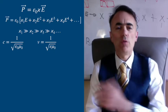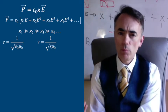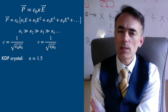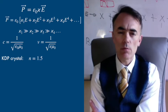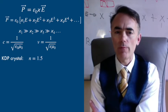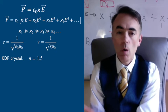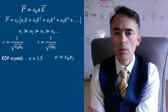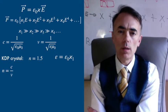So to have an idea of the orders of magnitude of what I'm talking about, let's consider this KDP crystal with an index of refraction of 1.5. If the electric field is small, I can consider only the linear term, from where I get that chi-1 is...